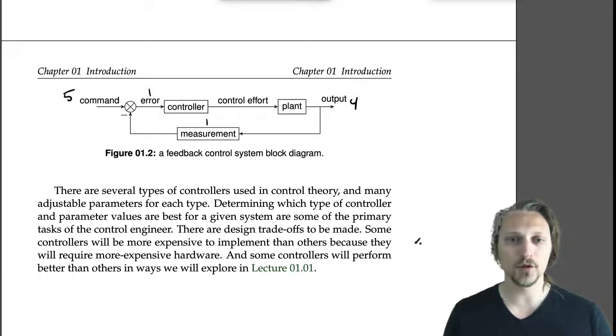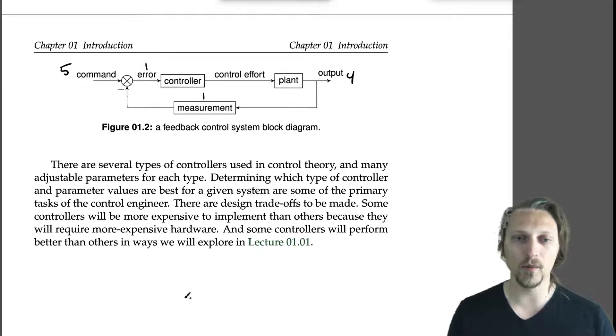There are several types of controllers using control theory and many adjustable parameters for each type. Determining which type of controller and parameter values are best for a given system are some of the primary tasks for the control engineer. There are design trade-offs to be made. Some controllers will be more expensive to implement than others because they will require more expensive hardware. And some controllers will perform better than others in ways we will explore in lecture 1.1, which is on performance.